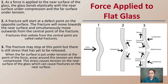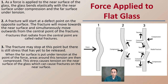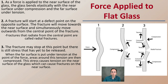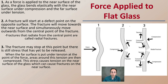As force is applied to a flat piece of glass, near the surface the glass bends, with the near surface under compression and the far surface under tension, causing a kind of bulge to occur. The fracture will start on the opposite surface, then move towards the near surface and simultaneously move outward from the central point of the fracture. This expansion phase spreads that tension up and down on the glass. The fractures that radiate from the central point are called radial fractures.